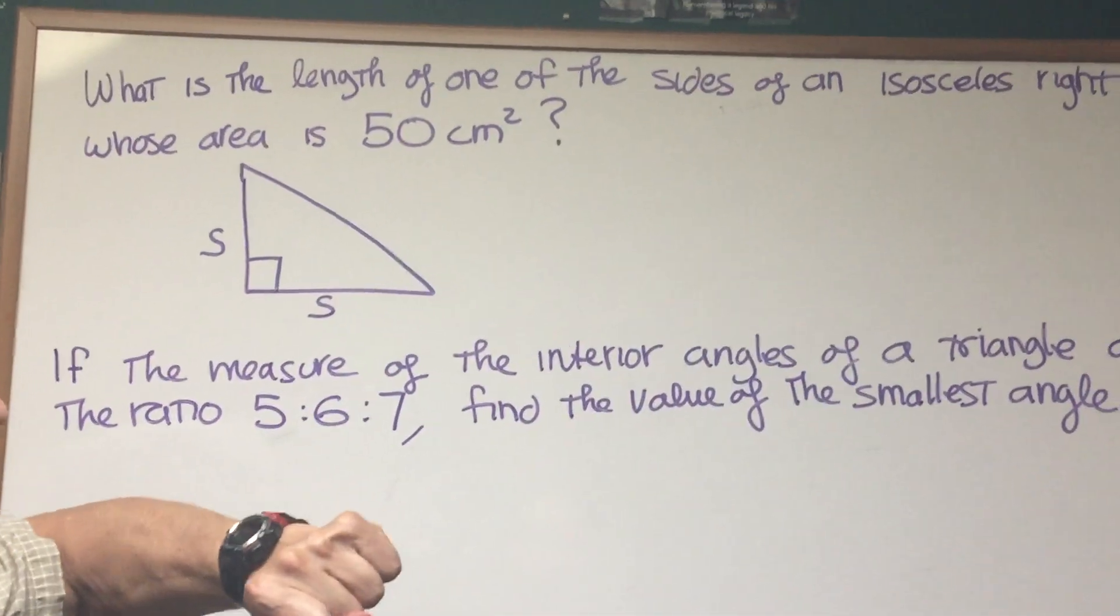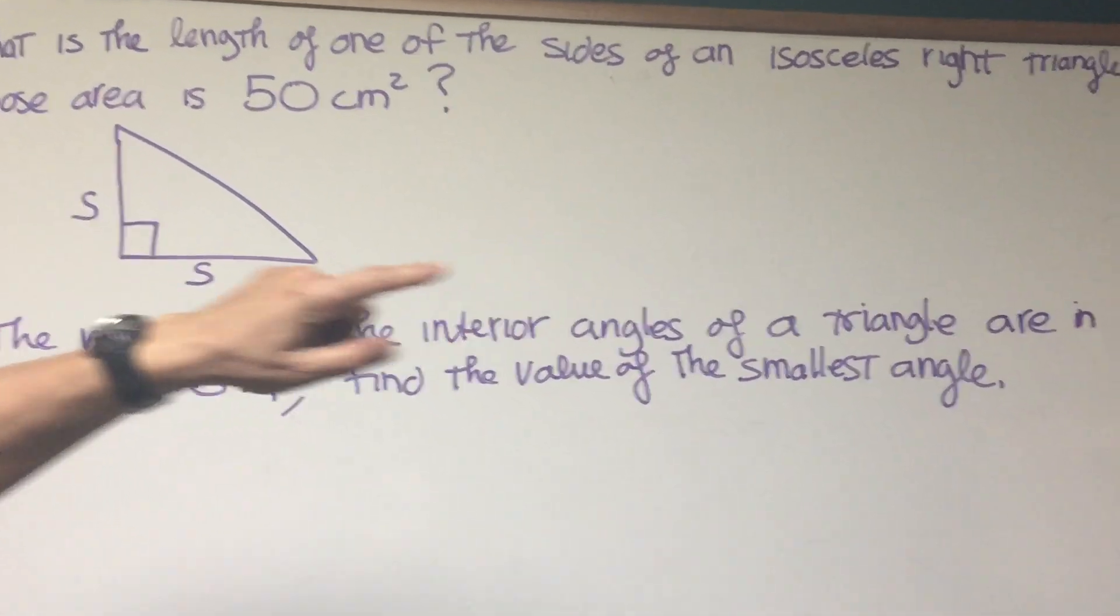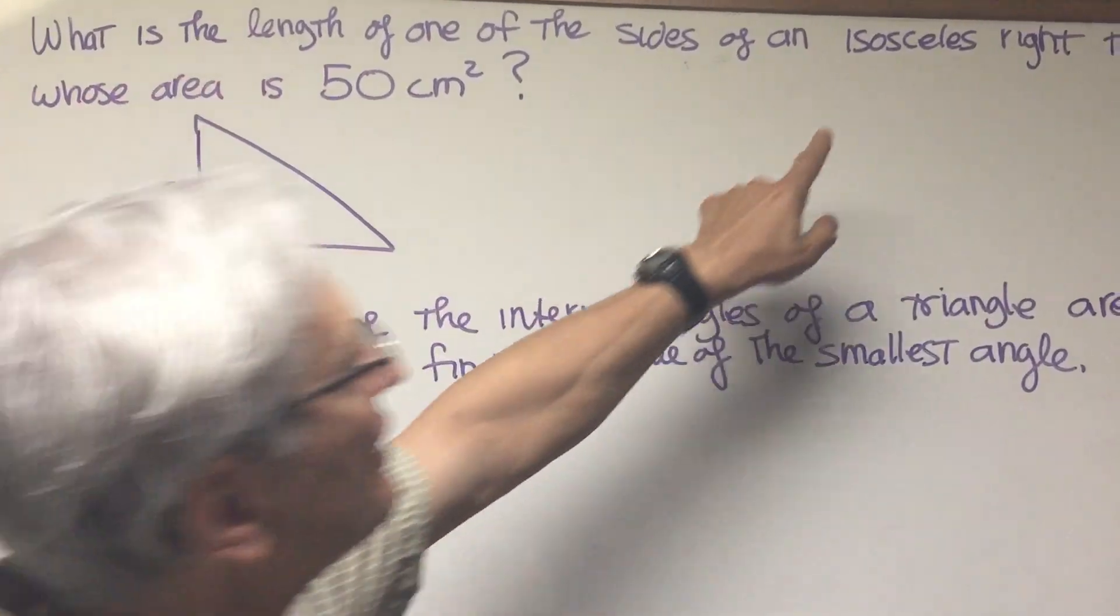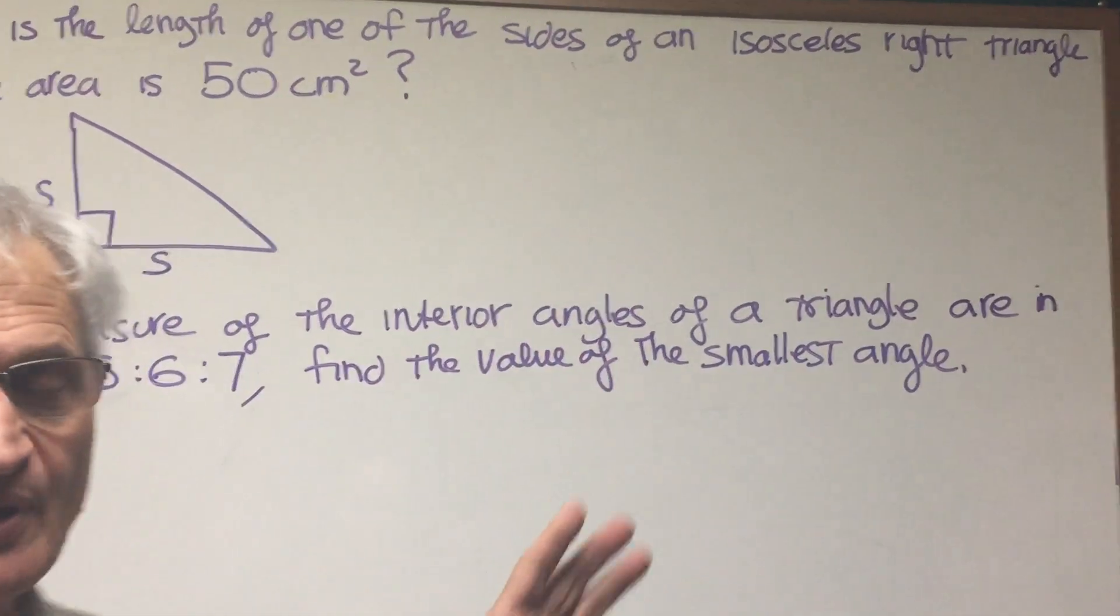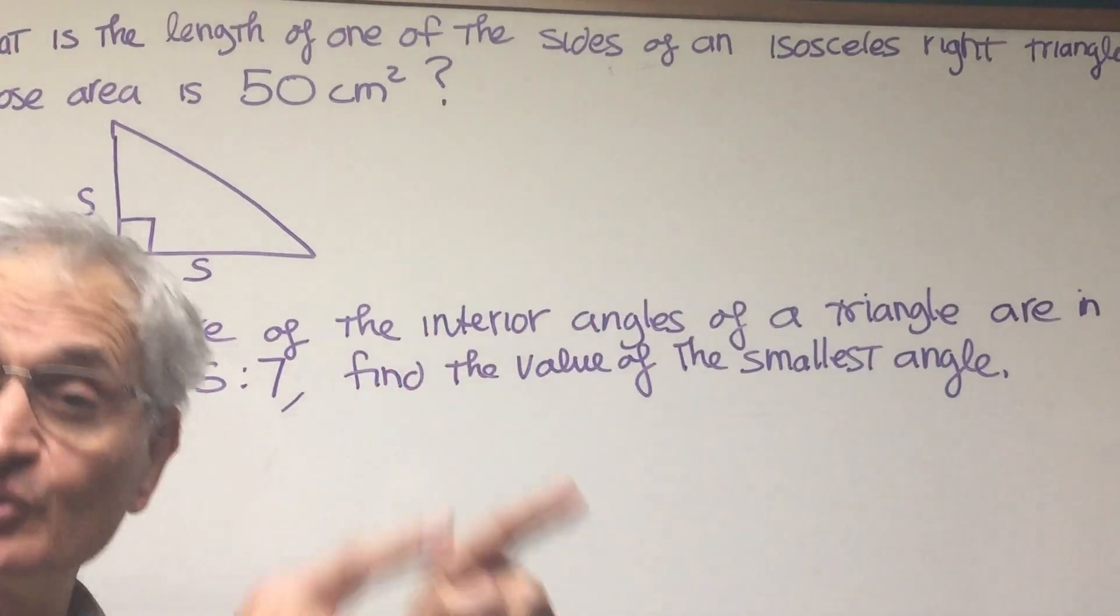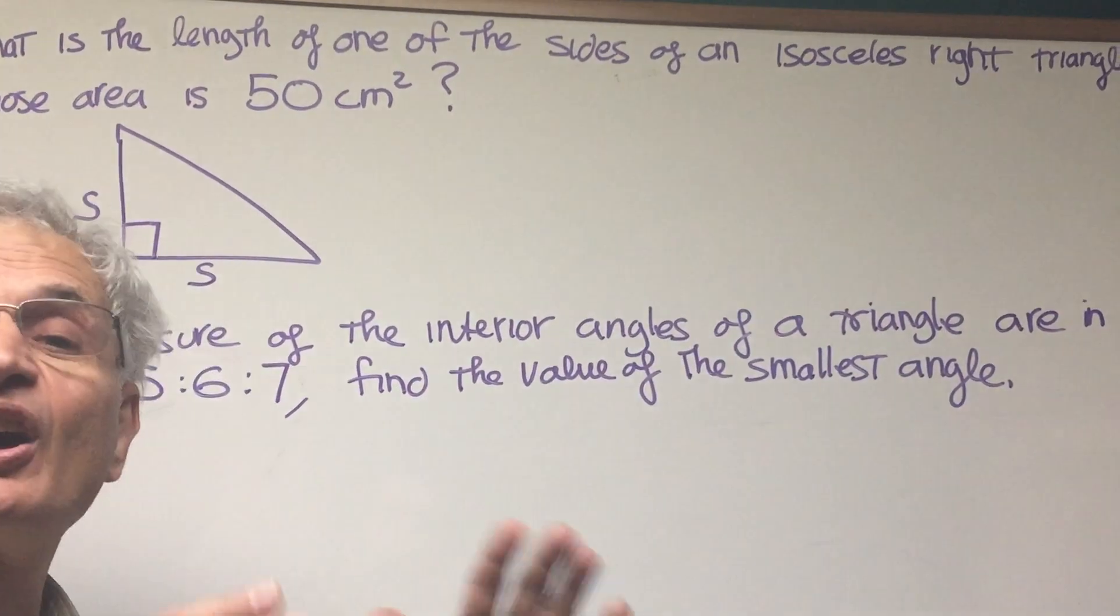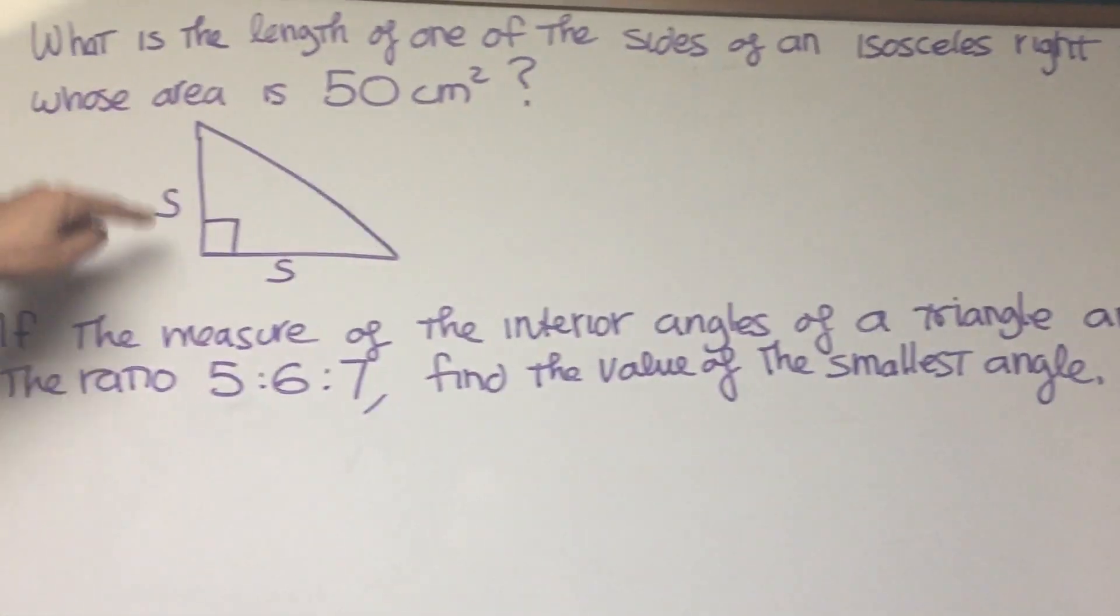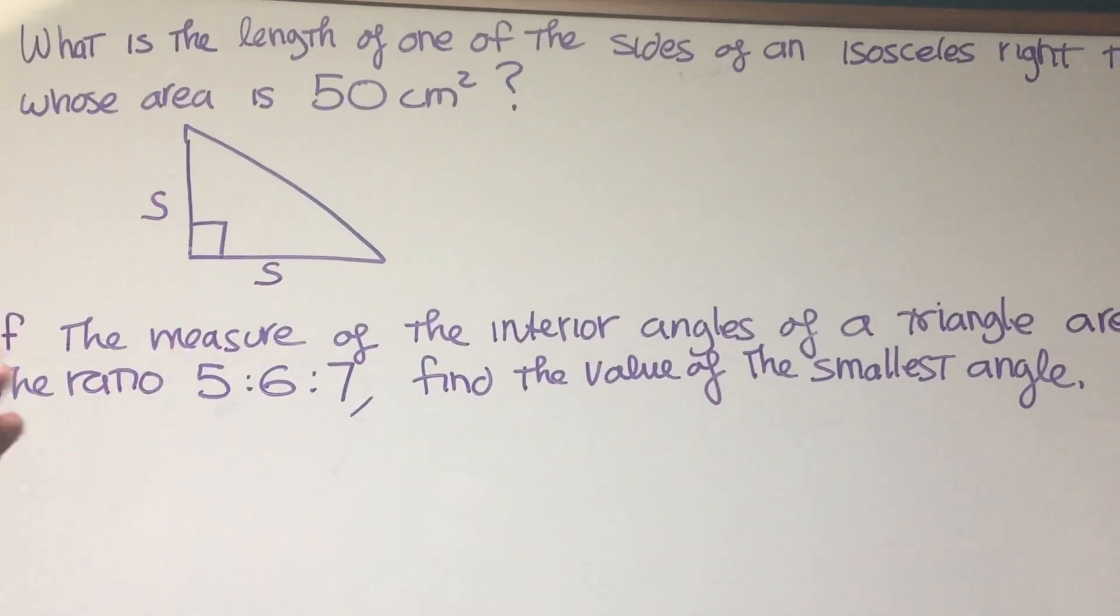What is the length of one of the sides of an isosceles right triangle whose area is 50 centimeters squared? Okay, now isosceles—let's get the terminology correct—that's a triangle that has two of its three sides of equal length. And if it's an isosceles right triangle, well, two sides of equal length that meet at a right angle.